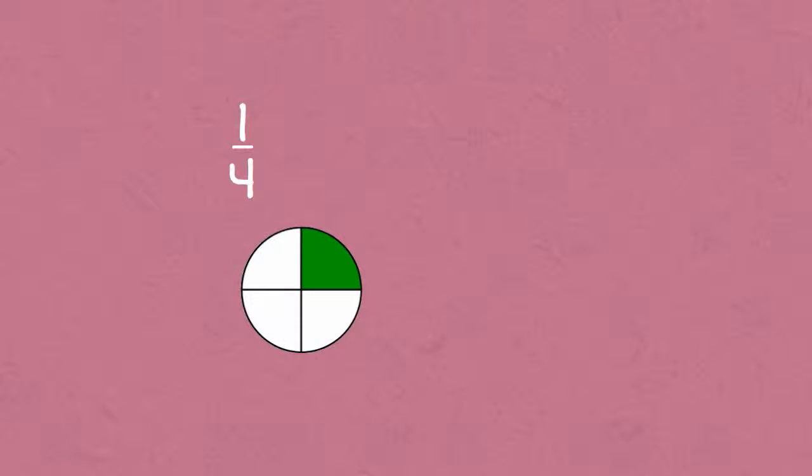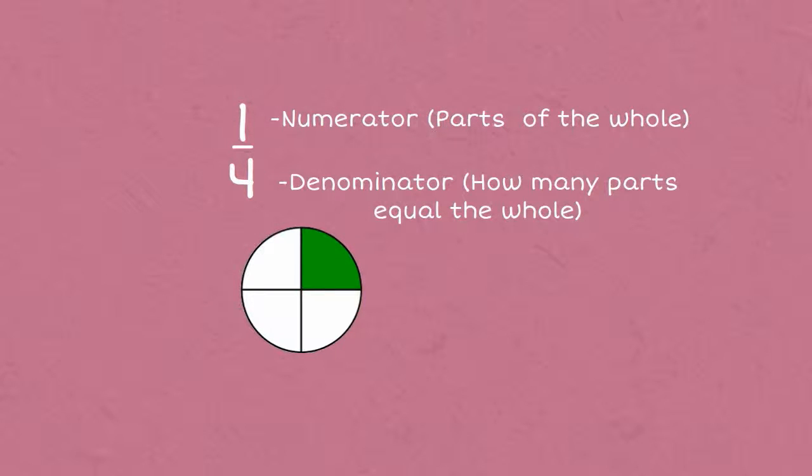A fraction is broken down into two parts. The numerator, the top number, which represents the parts of the whole being represented, and the denominator, the bottom number, which equals how many parts equal the whole.